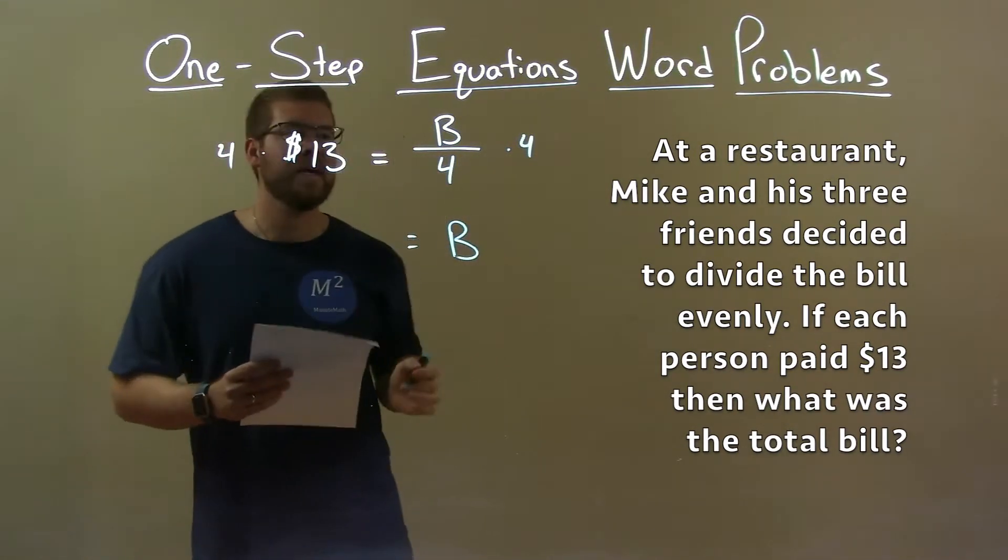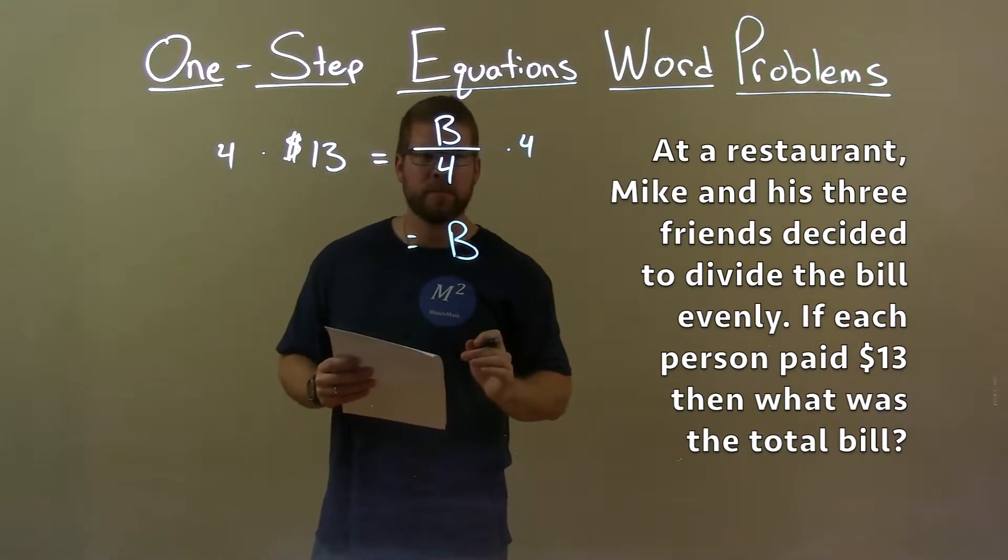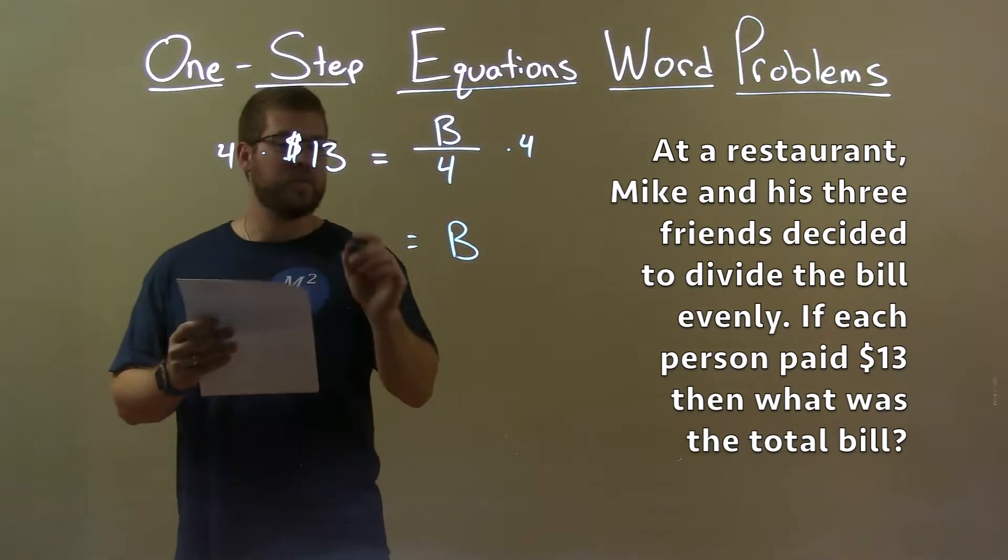This will give me B by itself, the total bill. Four times thirteen is fifty-two.